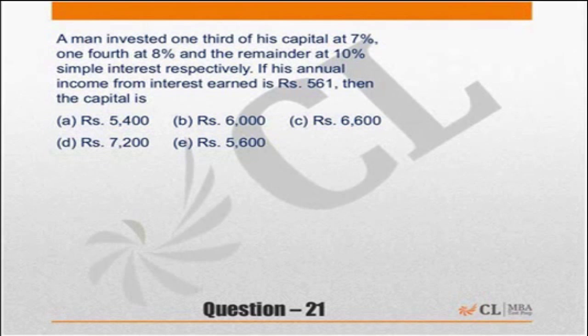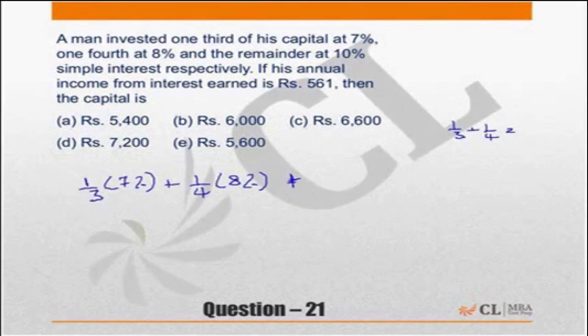One-third of the capital he is getting 7%. On one-fourth of the capital he is getting 8%. What is the remainder? 1 by 3 plus 1 by 4 is equal to 7 by 12. So the remainder is 1 minus 7 by 12 is equal to 5 by 12.